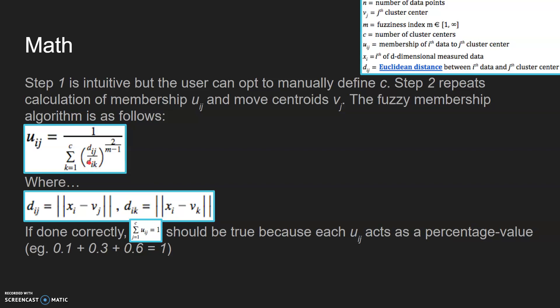That's going to be over this 2 over M minus 1. So DIJ is just the Euclidean distance right here, DIK right here. If done correctly, sigma K equals 1 until C.